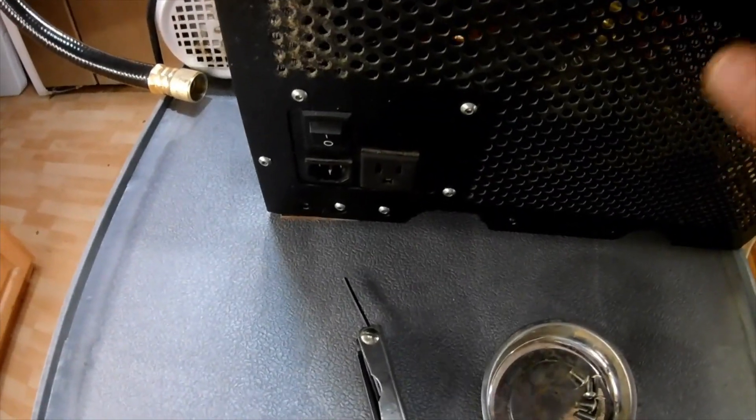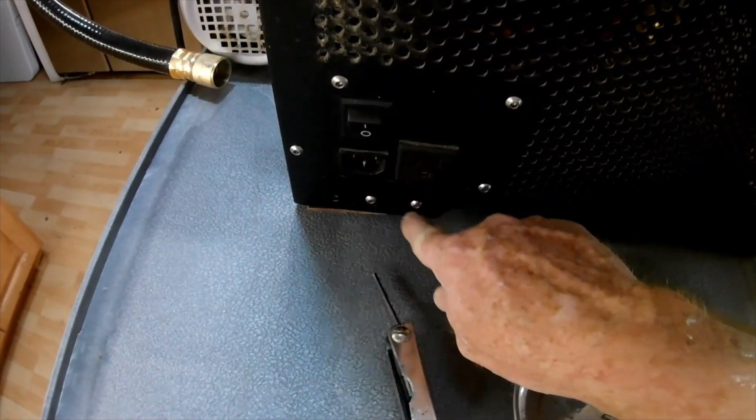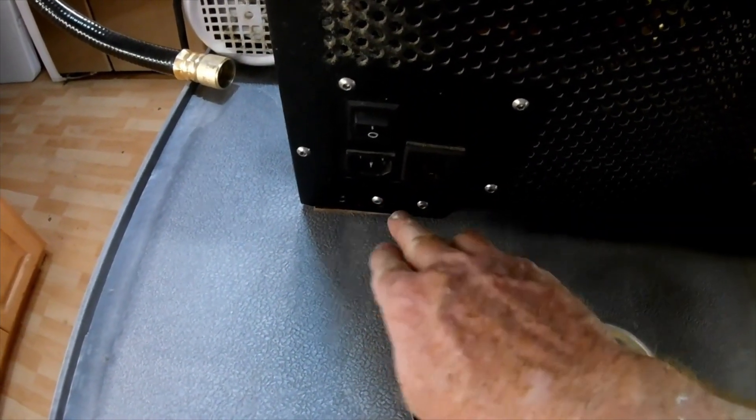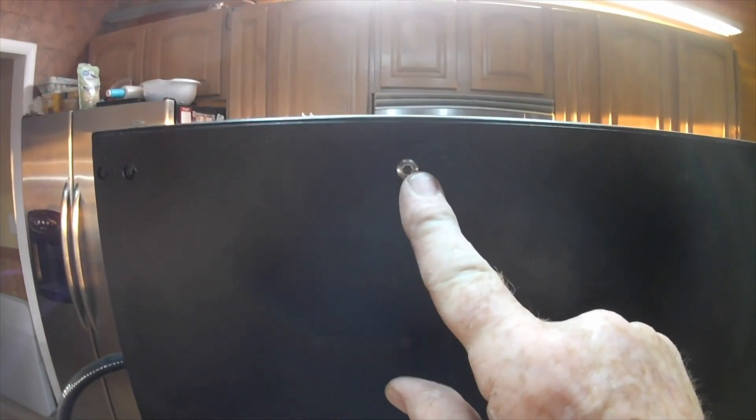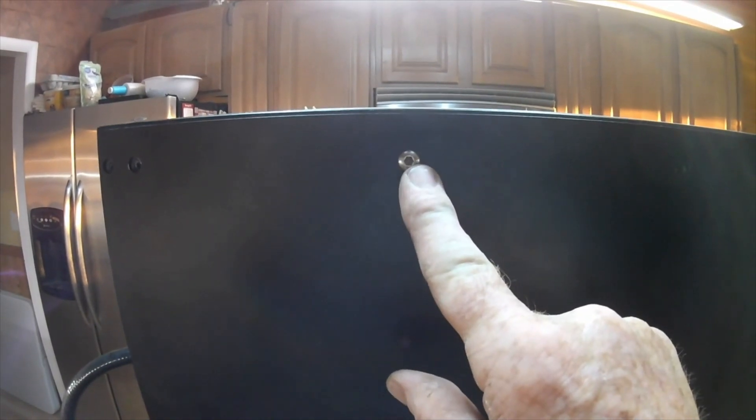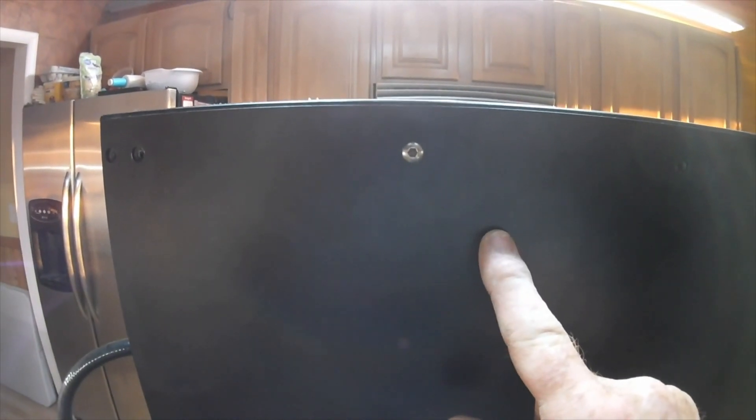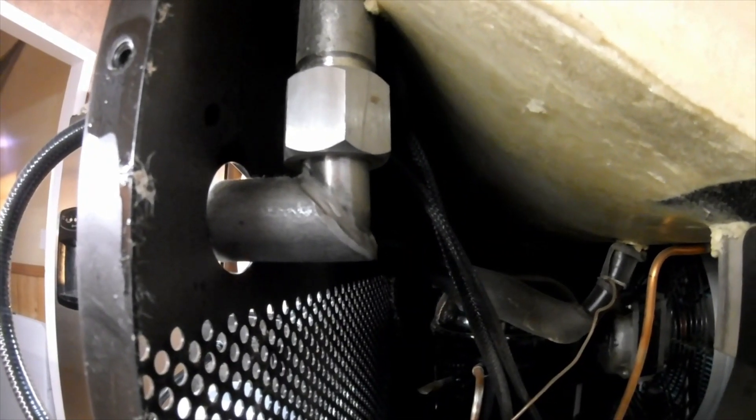As you're taking off the back cover, these two bottom bolts that have a penetration hole through, just leave these alone. You don't need to take those two off. The last thing you want to do is leave one screw attached to the top. Take that out last, just to keep the back of the freeze dryer from falling.